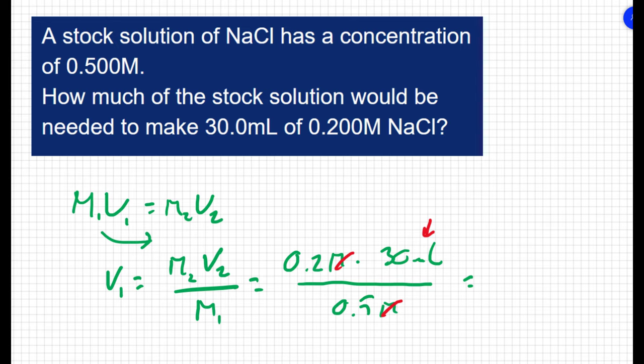So when I plug this into my calculator, I get 12 milliliters. All my data is in 3 sig figs, so I'll write this as 12.0 milliliters.